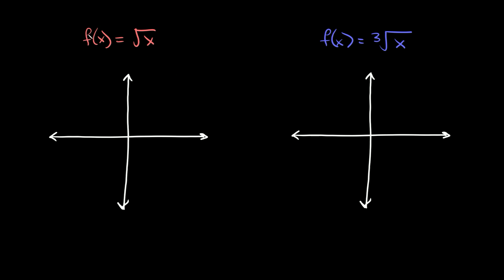Here we have f of x is equal to the square root of x. This graph is the parent function and basically just looks like that. And here f of x is equal to the cube root of x, which looks something like that.